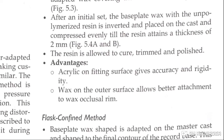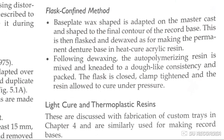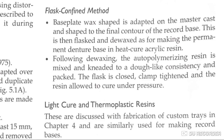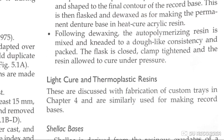The advantages of the wax-confined method are that acrylic gives accuracy and rigidity, and wax provides better attachment to the wax occlusal rims. In the flask-confined method, the base plate wax shape is adapted to the master cast and shaped to the final contour of the record base. It is then de-waxed to become a permanent base. After de-waxing, the autopolymerizing resin is mixed, kneaded to a dough-like consistency, packed, the flask closed, clamped tightly and the resin cured under pressure.